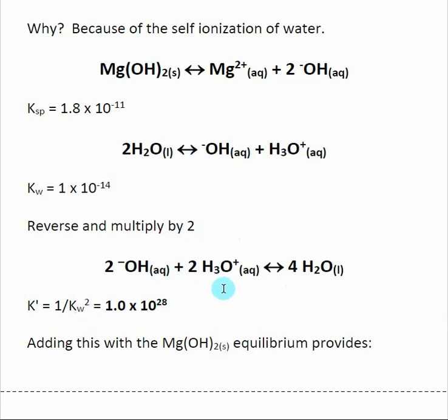Going from here to here, if I find the new K value for this reaction, I take the inverse of KW and square it. For this reaction, the K value is 1.0 times 10 to the 28th. So this is a very large number. My KSP is a small number, but when we reverse it and we're dumping acid into our solution, that's a very large number.